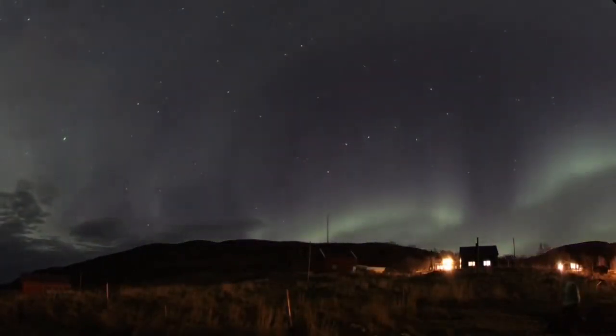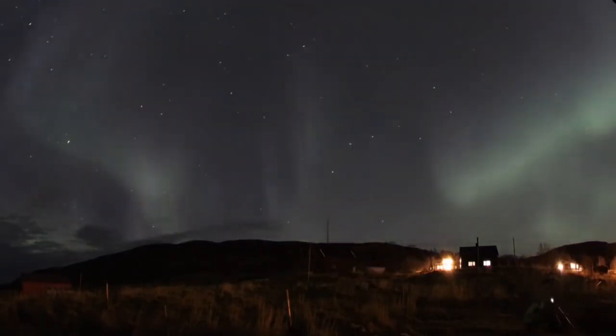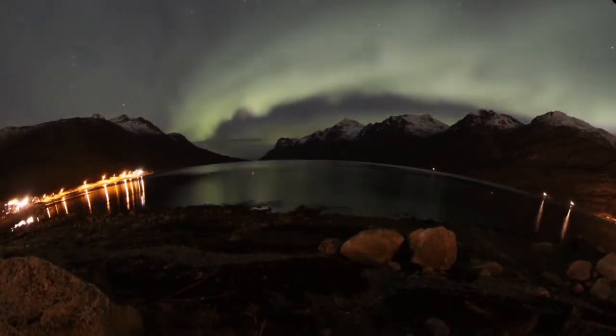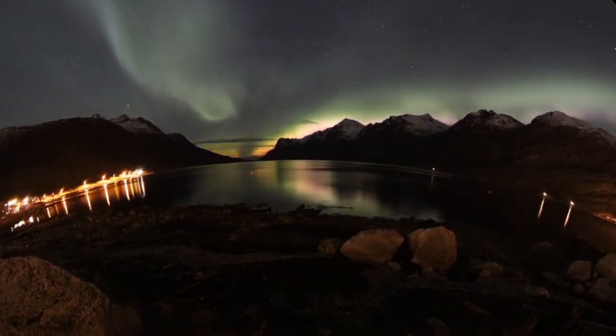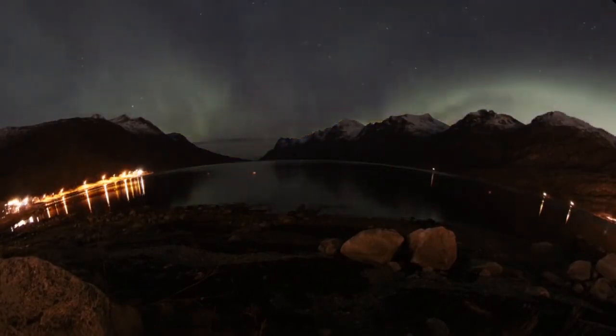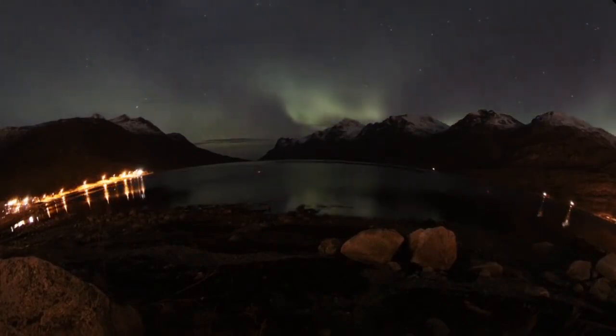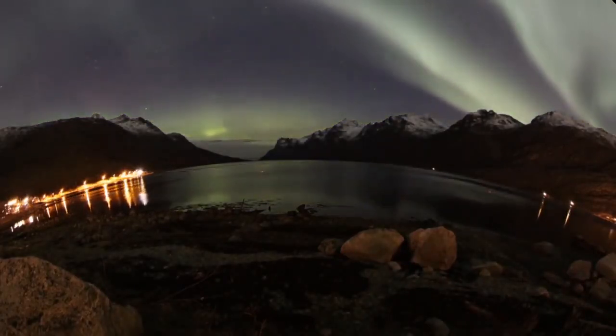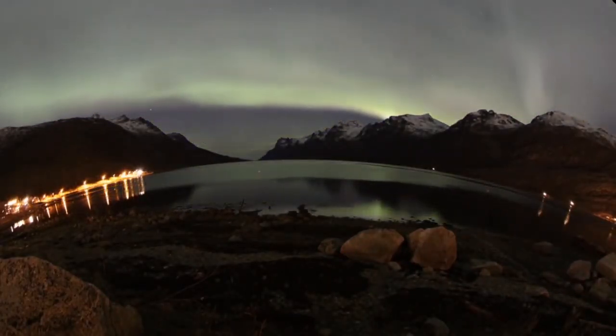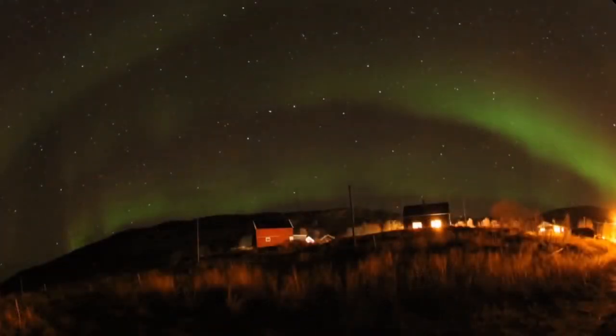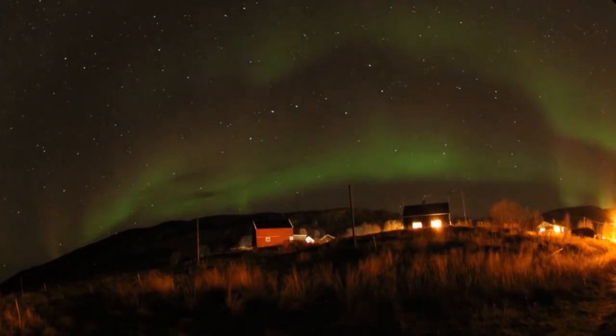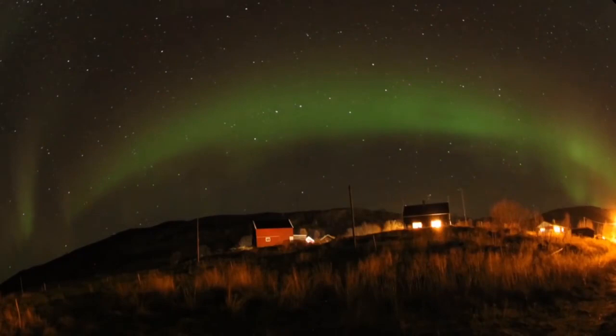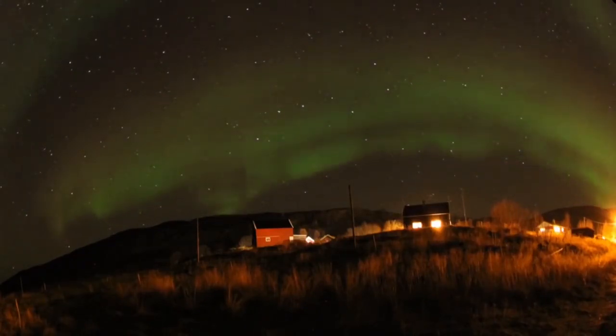Auroras can appear as long, narrow arcs extending overhead from horizon to horizon. From the side, they look like ribbons that kink, fold, and swirl. Their flickering rays align to the Earth's magnetic field and ruffle like curtains in an imaginary wind. They can also spread out like a heavenly crown engulfing the sky in a misty veil. In an auroral substorm, sheets twist into waves and curls. Our ancestors saw great dragons or serpents in the sky.